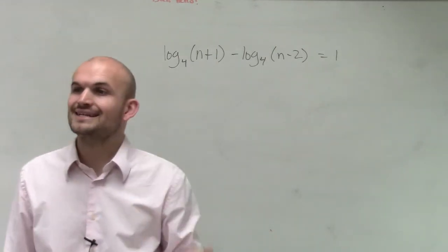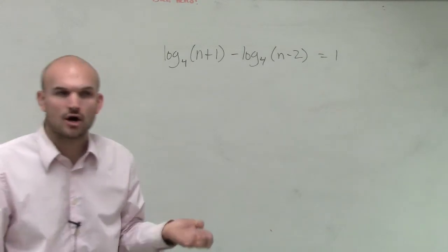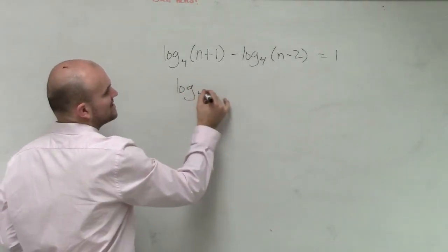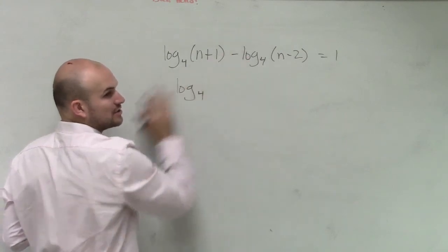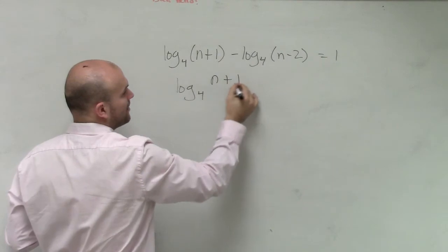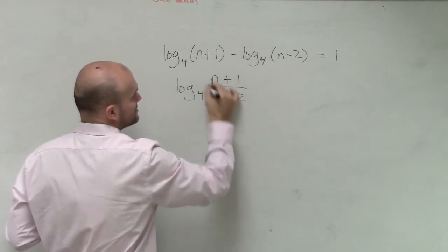So here what I'm going to want to do is condense these down to one logarithm. So I can do that by saying log base 4. Remember, by using the quotient rule of logarithms, this would be n plus 1 over n minus 2.